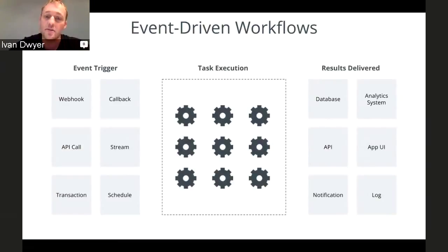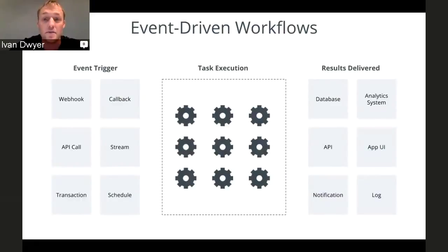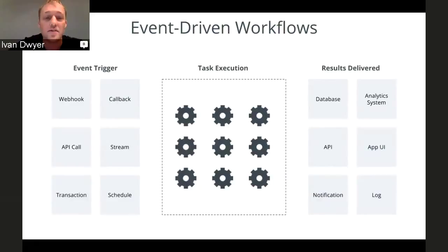One thing that's really important is this execution component, and that's where the task-centric platform comes into play. AWS calls them Lambda functions. We call them workers. It's really just a matter of taste. Essentially, it's a single piece of code that does one job. The platform provider — which is what we do — abstracts away all the thinking around operations and infrastructure and choreographing those tasks. We just run them. Developers never have to worry about spinning up infrastructure to run them.